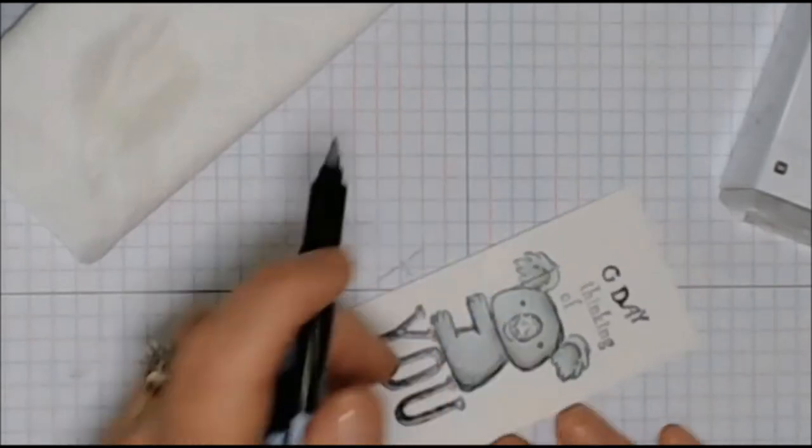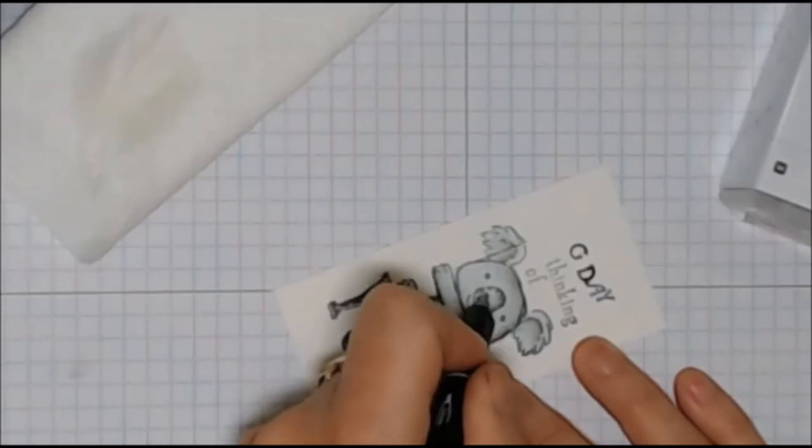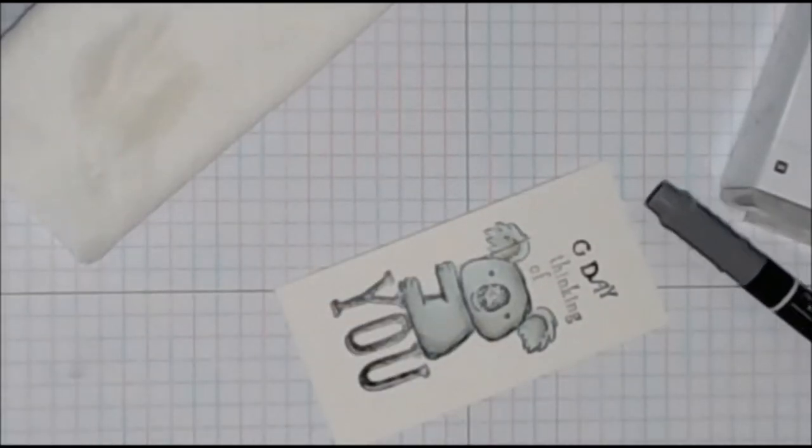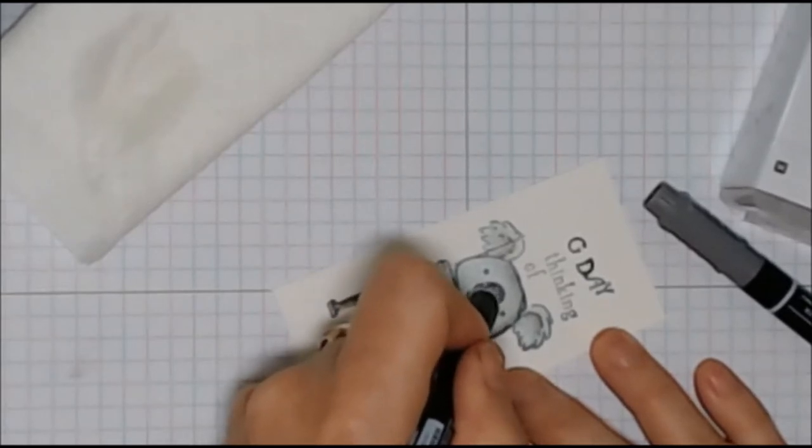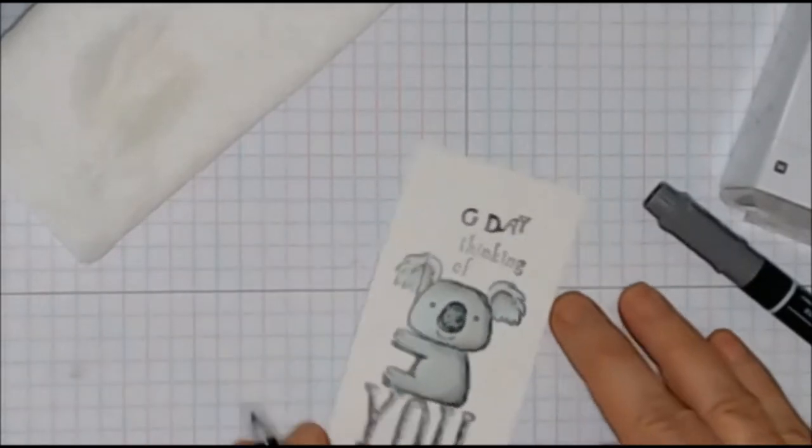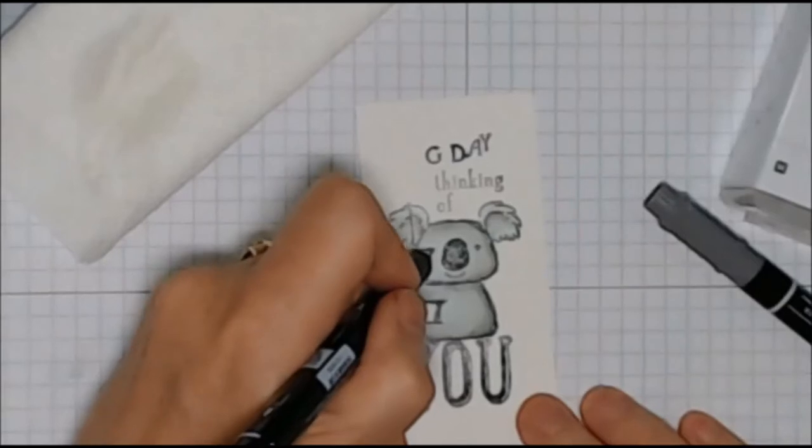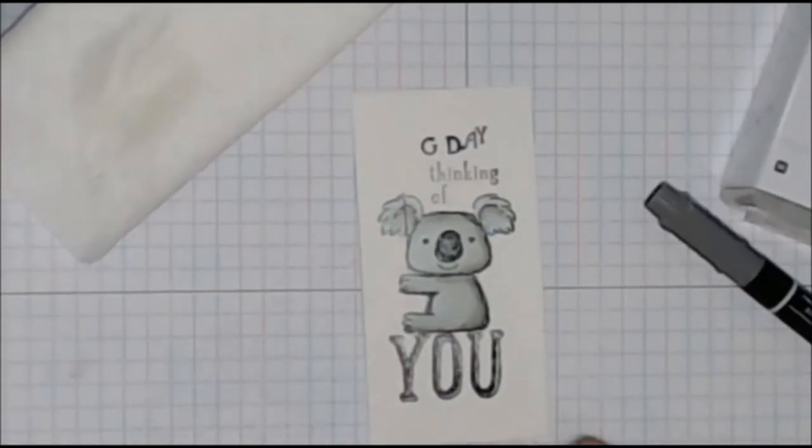Now I'm going to come in and just fill in his nose with the basic grey, just with some diagonal stripes. And if you look at the stamp, that's how the stamp is finished off as well. Now I'm bringing in the smoky slate to colour in the inside, and I'm just going to define his two cute little eyes as well, just with the smoky slate marker. And there he is, all finished.